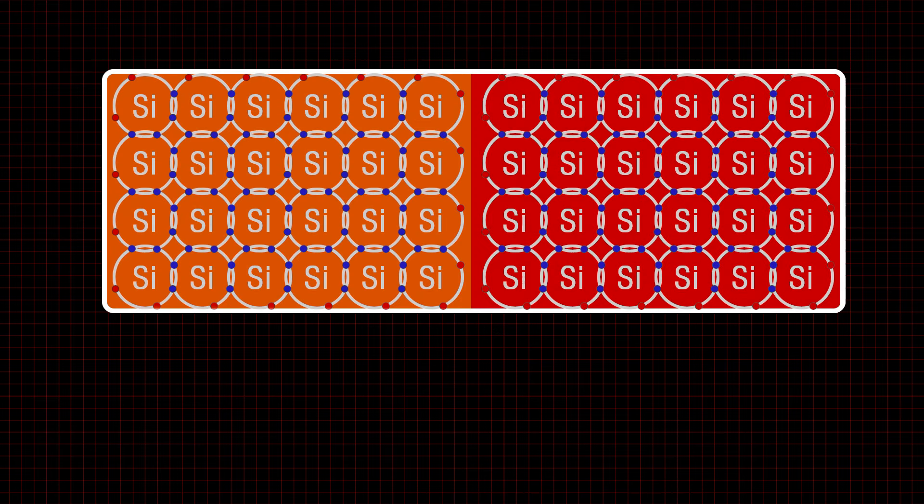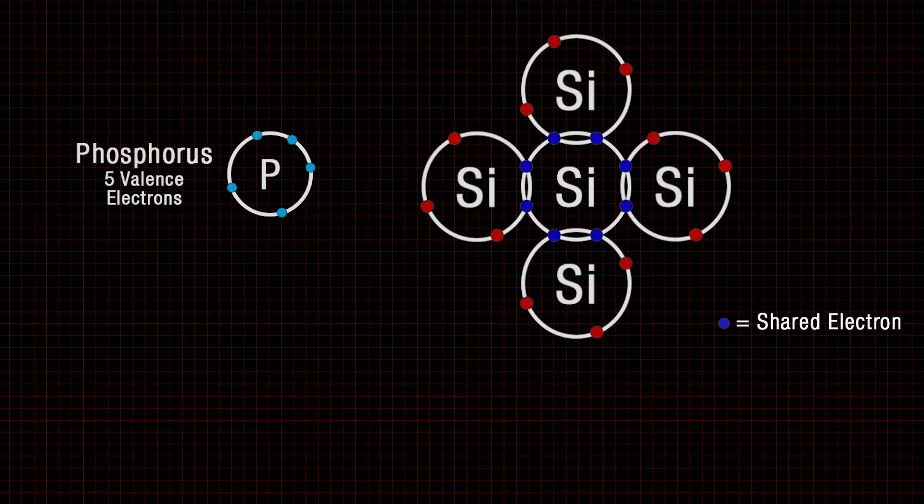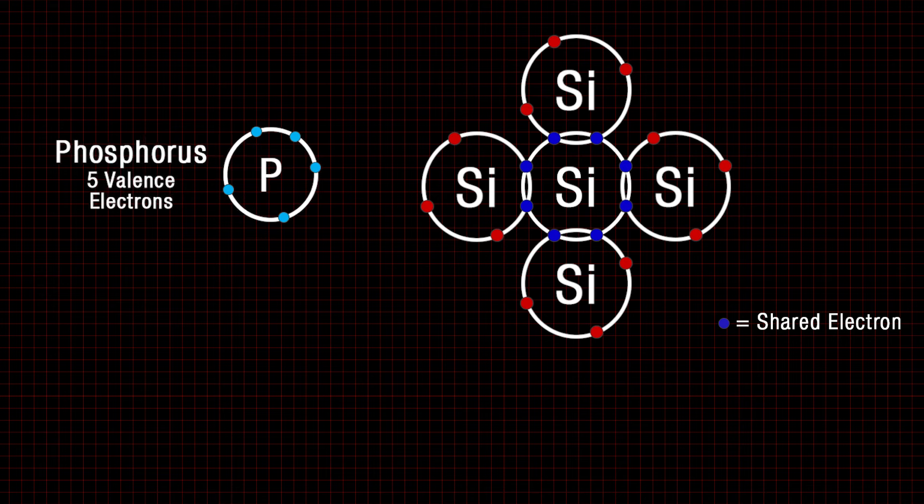Now imagine a grouping of silicon atoms, all sharing their valence electrons. If we split those into two regions and dope one half of the material such as phosphorus, we create an n-type material. This means we are replacing some of the silicon atoms with a material that has more than four electrons.